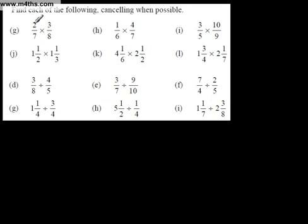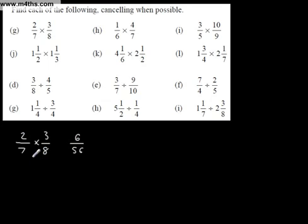What we've got here is 2 over 7 multiplied by 3 over 8. The common issue here is that people go 6 over 56. What we need to get into the habit of — we know multiplying the tops and multiplying the bottoms works — we need to be looking at common factors. We can always simplify diagonally or vertically, not horizontally. 1 times 3, 7 times 4, gives us 3 over 28 — exactly the same, just a simplified fraction.